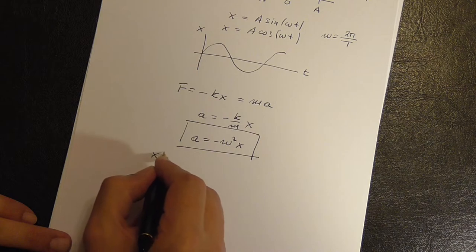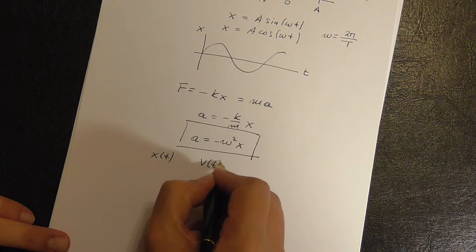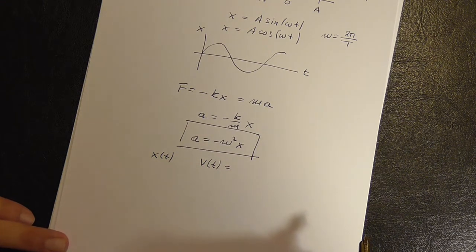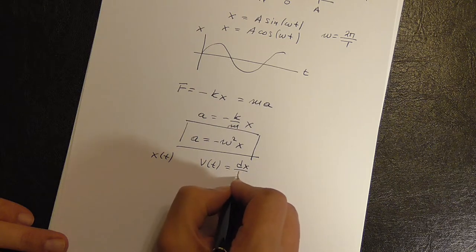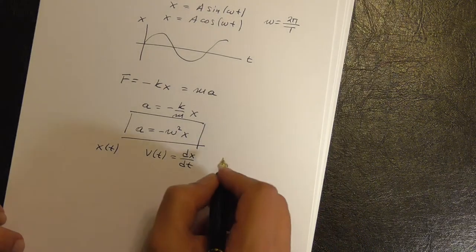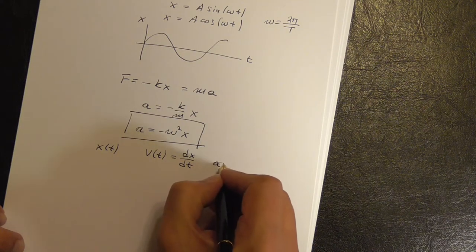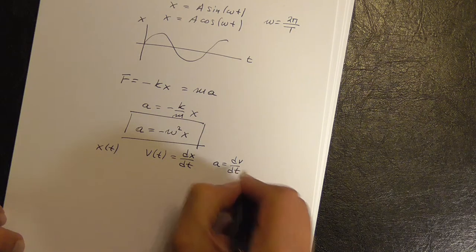X is a function of time. The velocity is the rate of change of X. So this is the first derivative of X with respect to time. The acceleration is the rate of change of the velocity.